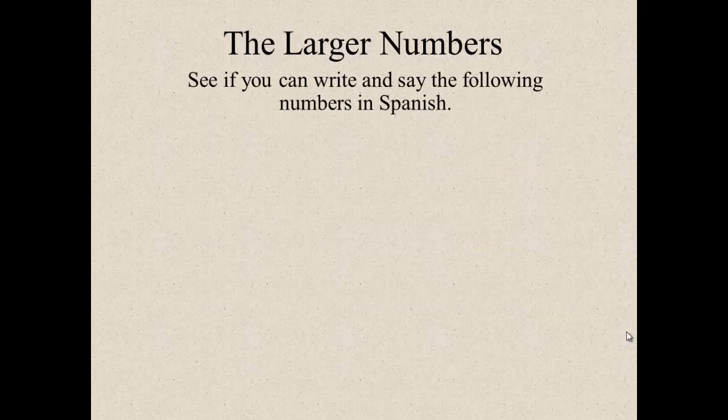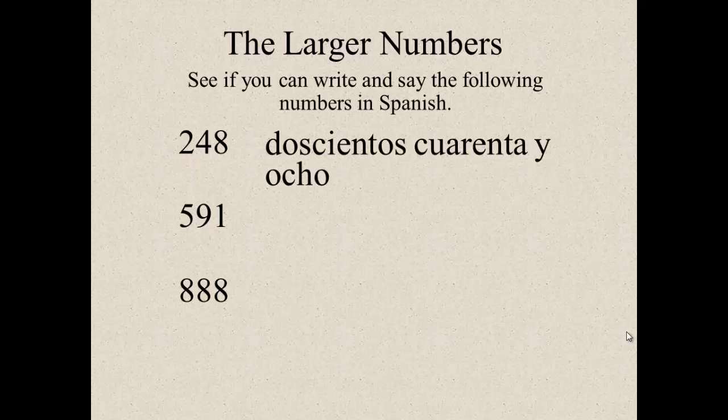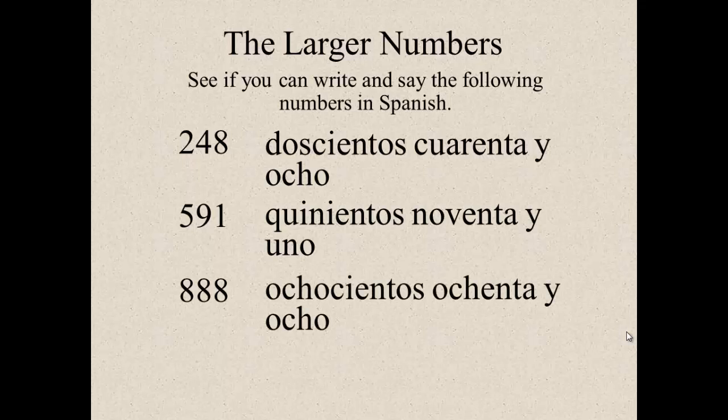See if you can write and say the following numbers in Spanish. 248, 591, 888. Pause your computer now and push play when you're finished. If you said doscientos cuarenta y ocho, you are correct. Five hundred and ninety-one is quinientos noventa y uno. And eight hundred and eighty-eight is ochocientos ochenta y ocho. Muy bien. Good job. Let's continue.